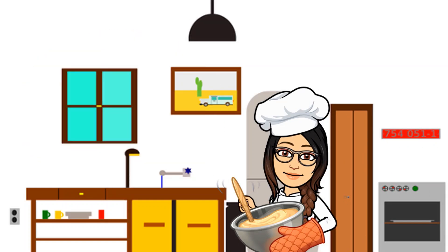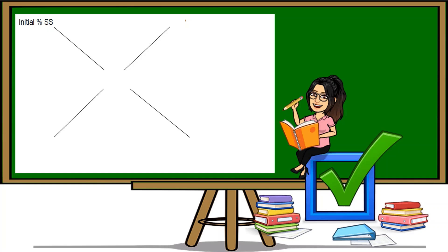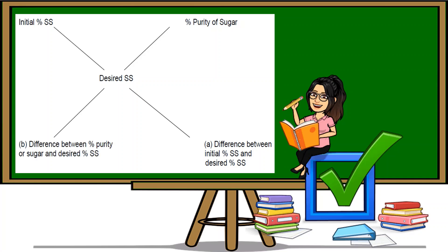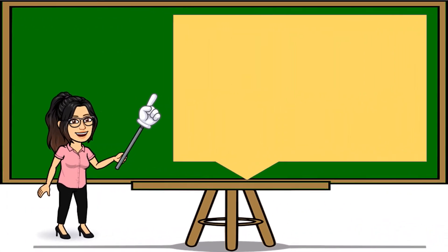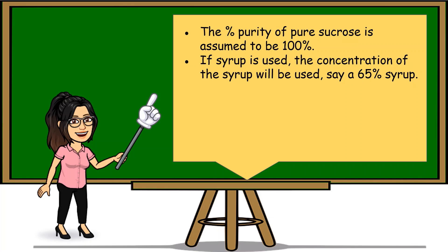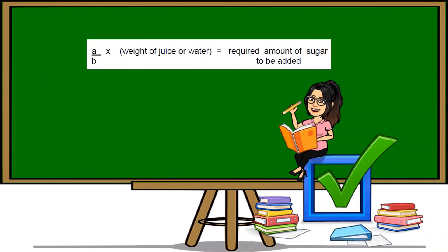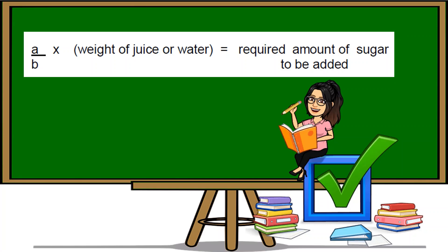Methods for Calculating BRICS-Acid Ratio — Sugar Concentration. The Pearson Square is a widely used method for determining and calculating the degree BRICS. We write the initial soluble solid, the percent purity of sugar, the desired soluble solid, the difference between initial soluble solid and desired soluble solid, and the difference between purity of sugar and the desired soluble solid. The percent purity of sucrose is assumed to be 100%; if syrup is used, the concentration of the syrup will be used, say a 65% syrup. Water is 0% soluble solid. Given a certain weight of sugar or water, the weight of sugar to be added to obtain the desired soluble solid may be obtained by the formula: A over B times weight of juice or water equals the required amount of sugar to be added.